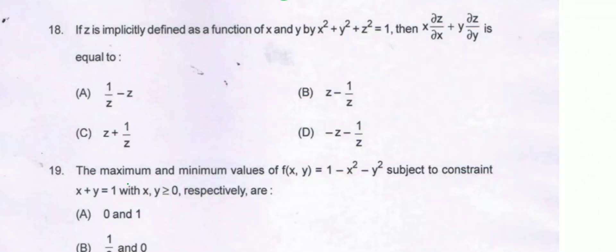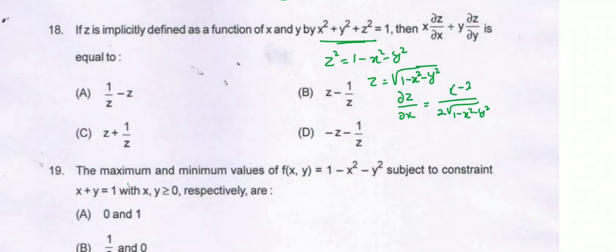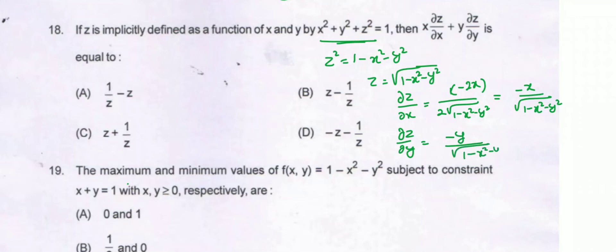Question number 18. If z is implicitly defined as a function of x and y by x²+y²+z²=1, then x·∂z/∂x + y·∂z/∂y is equal to what? We write z² = 1-x²-y², so z = √(1-x²-y²). Then the partial derivative of z with respect to x is (1/2)·(1/√(1-x²-y²))·(-2x), which simplifies to -x/√(1-x²-y²). Similarly, ∂z/∂y = -y/√(1-x²-y²).